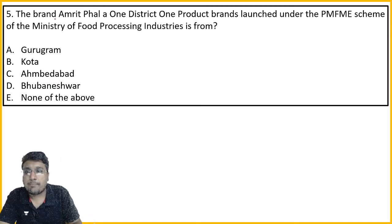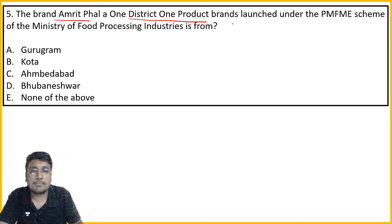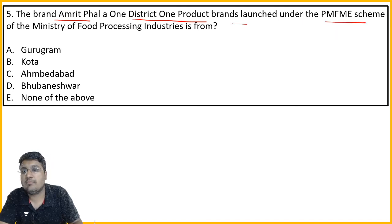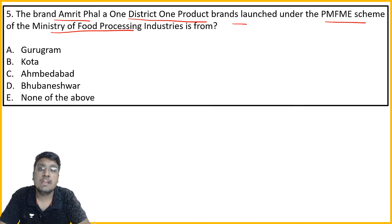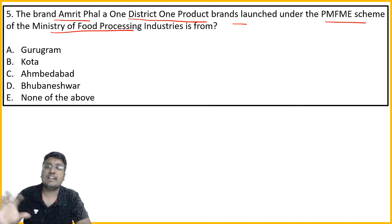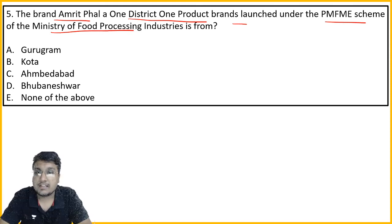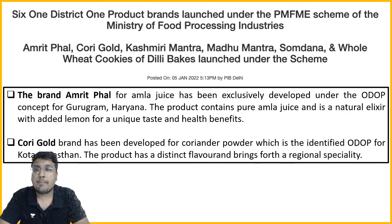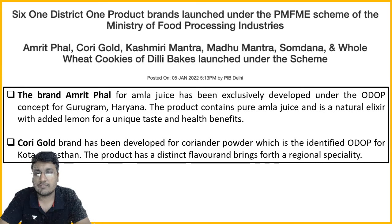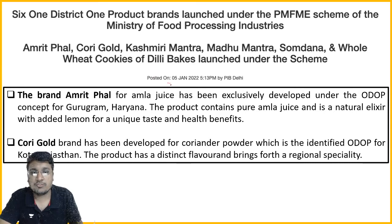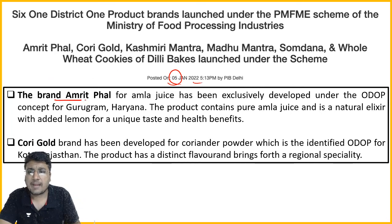Next question: The brand 'Amritphal' is a One District One Product (ODOP) brand launched under the PMFME scheme of the Ministry of Food Processing Industries. Basically, under ODOP, we promote a specific product in every district. This is a January 5, 2022 news item. So which product is brand Amritphal? Homework: study the PMFME scheme.